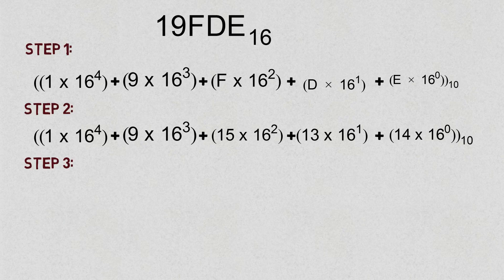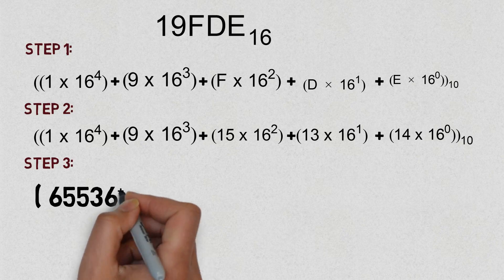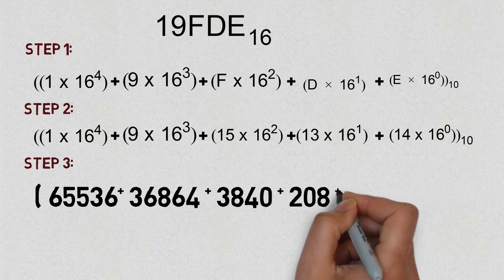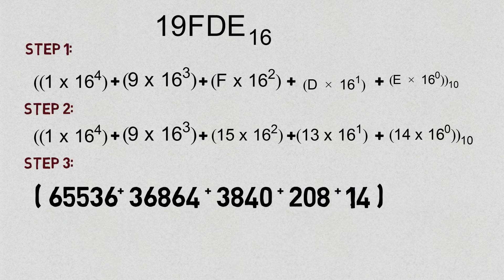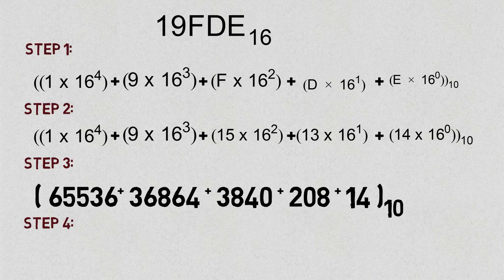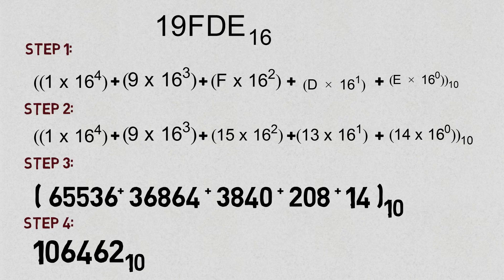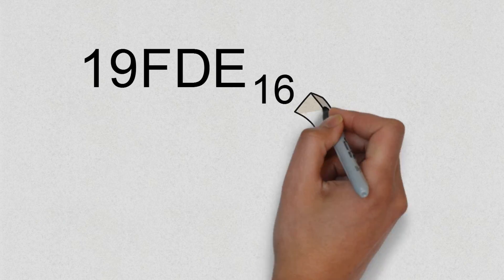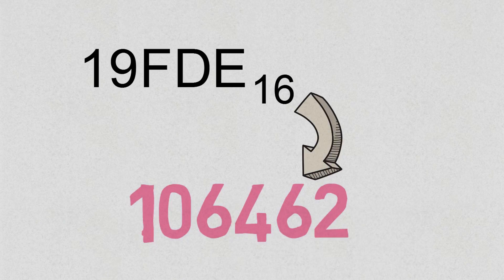Calculating the actual values: 1×16⁴ = 65,536; 9×16³ = 36,864; 15×16² = 3,840; 13×16¹ = 208; 14×16⁰ = 14. By adding all these values, we get 106,462. So the decimal equivalent of the hexadecimal number 19FDE is 106,462.